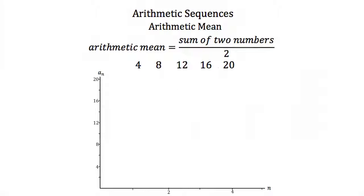I can plot these different terms on a graph. On this graph, the value of our term, a_n, is on the y-axis, and the position n is on the x-axis. Our first term is 4, so we go to 1 on x and up to 4 on y. Our second term is 8, so we go to 2 and up to 8. Our third term is 12, so 3 up to 12. Our fourth term is 16, so 4 on x and 16 on y. And our fifth term is 20. Notice that these create a linear graph, or a straight line, so every point on our sequence will be on this line.